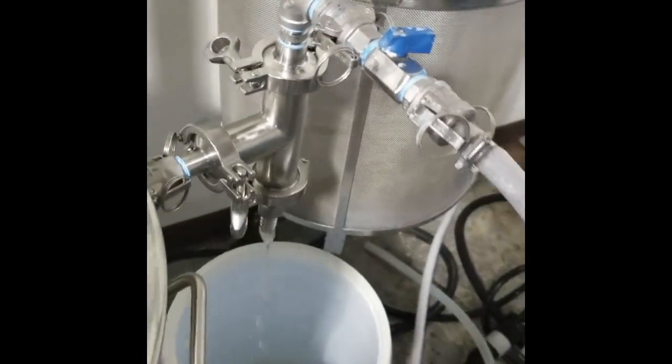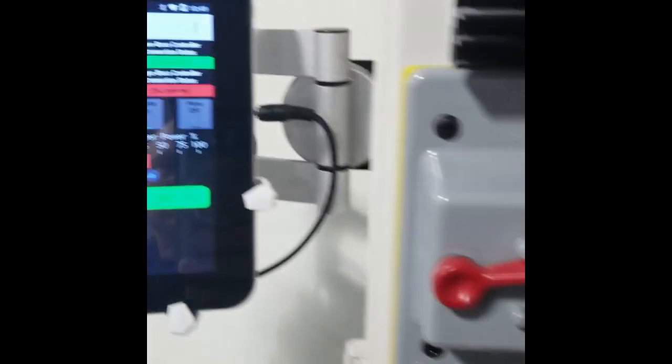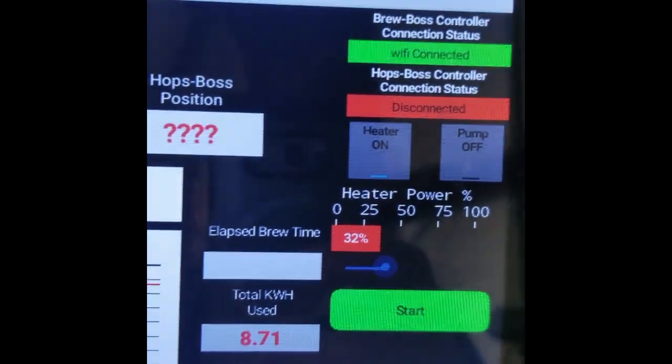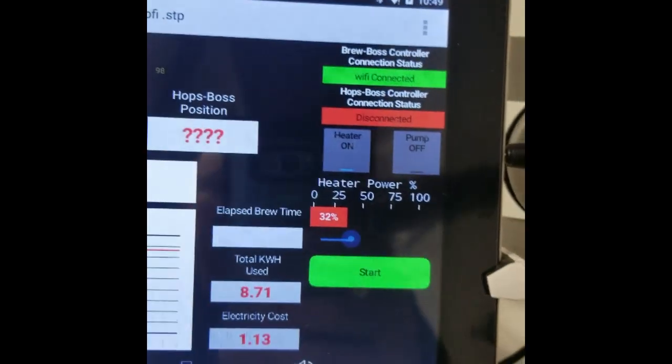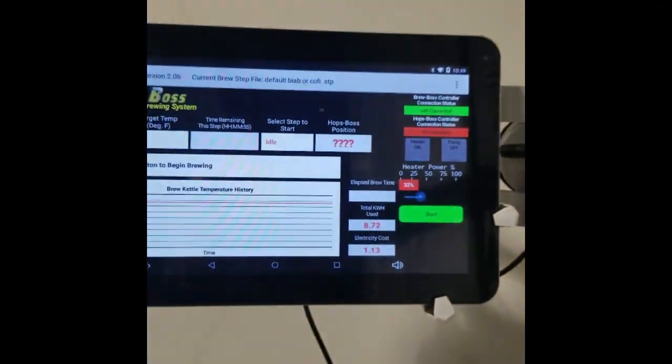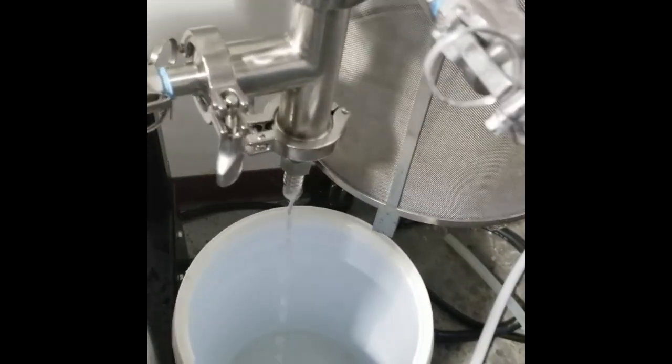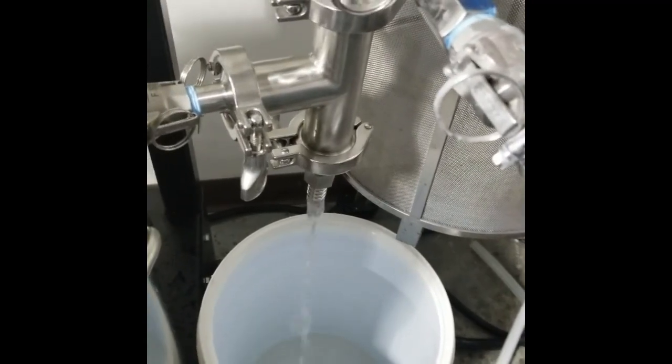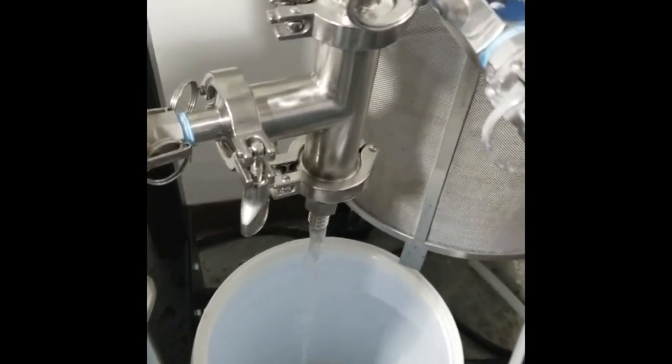But you're actually saving energy because I'm able to turn the power of my boil down to below 30 percent usually. Right now I'm at 32 and it's actually boiling too much. Where I normally need 63 percent power. So I'm actually saving a lot of energy because for my one hour boil I can leave the cover on. That means I lose less heat in the kettle and I can use a lower power setting.